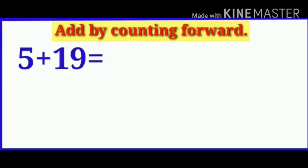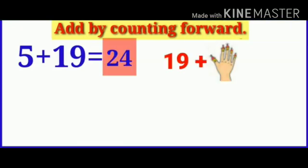5 plus 19. Children, here 19 is bigger than 5, so take first 19. Count 5 fingers forward from 19: 20, 21, 22, 23, 24. The answer will be 24.